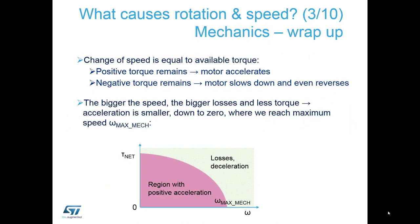So let's wrap it up in the mechanical point of view. The change of speed is equal to the additional torque. If it's positive, the motor accelerates, but if it's negative, the motor decelerates and can even reverse. Additionally, the bigger is the speed, the bigger losses we see in the bearings by the load itself. So it reduces the available torque, which means that the acceleration reduces and at one speed, the acceleration is reduced down to zero, which means we can't mechanically achieve a higher speed with given system parameters. We can call this speed a maximum mechanical.